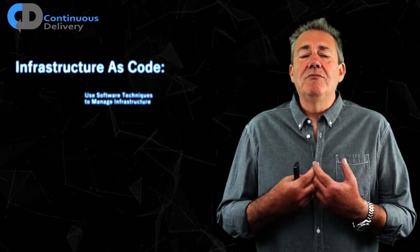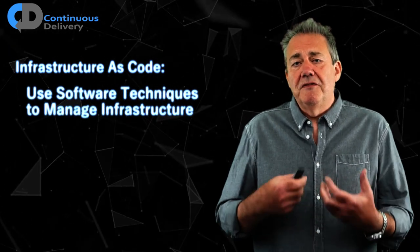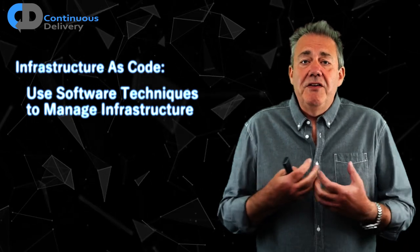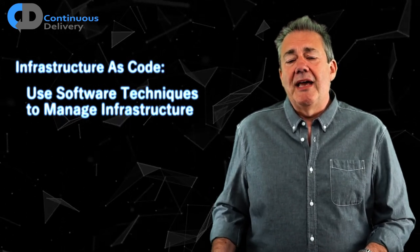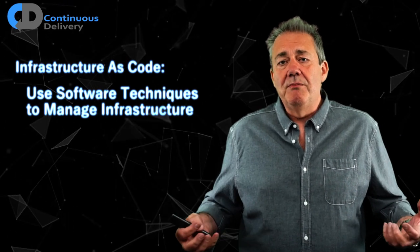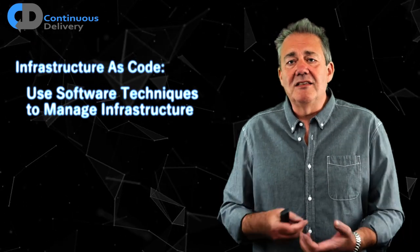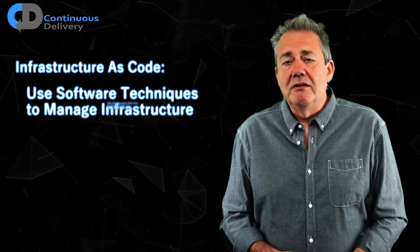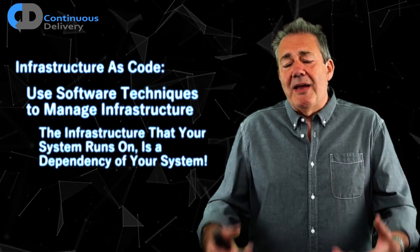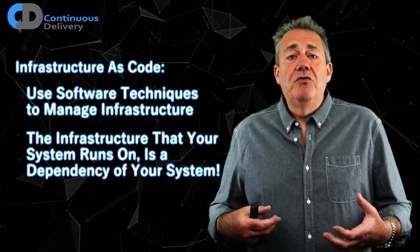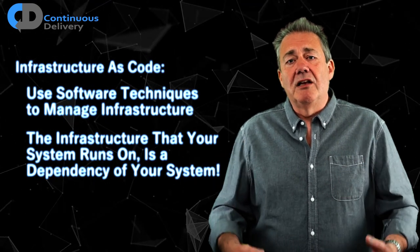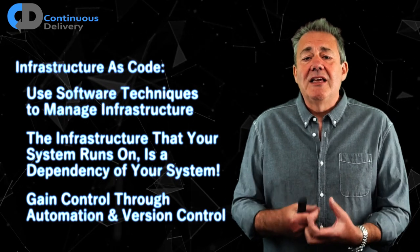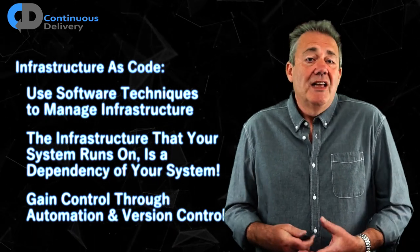Infrastructure as code is the attempt to use software techniques to configuration-manage our infrastructure. What do we mean by infrastructure? If you think about all of the stuff that needs to be in place to support the software systems that we build — the operating systems, the programming languages, the databases, messaging services, web servers, whatever they may be — that's what we're talking about today. Those things are really a dependency of the systems that we build, and therefore if we want genuine repeatability and reliability we need to take control of those things. We want to gain control by making the provisioning and updating of our infrastructure an automated thing.